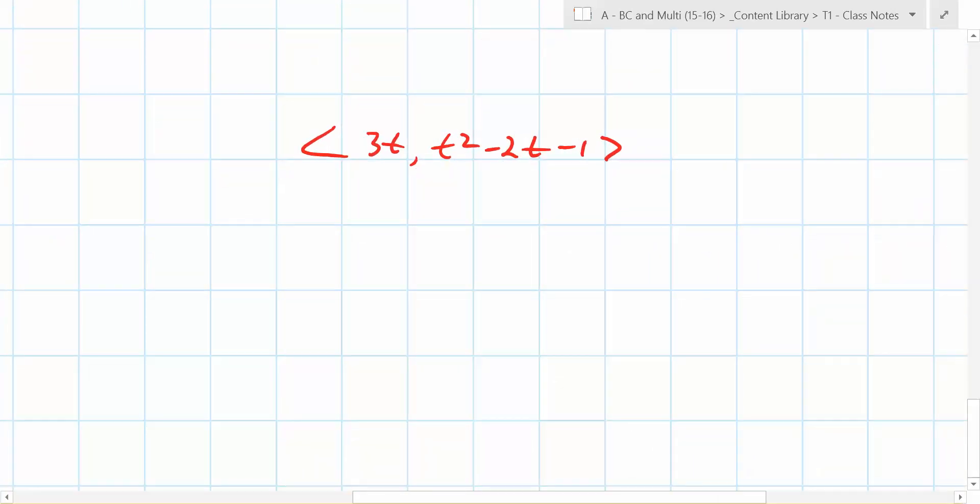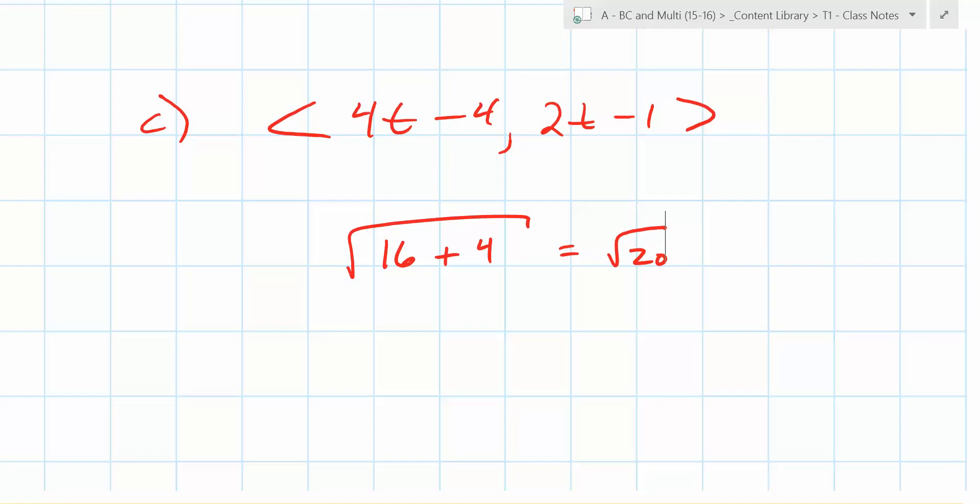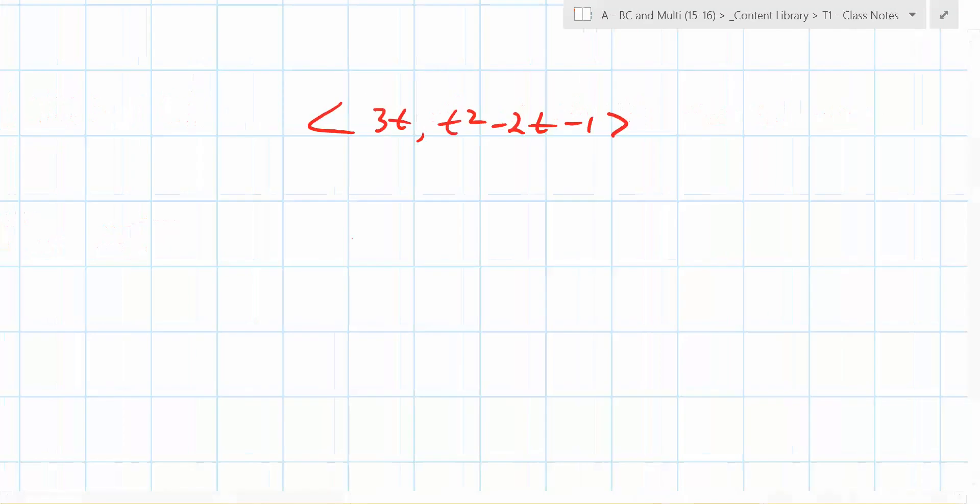I think it's 16 plus 4, right? So this one's, that's kind of cool. Square root of 20. Nice. And what's nice about that is, does it matter what time it is? What's the speed of this thing always going to be? Radical 20. Radical 20. That's kind of cool. Okay. What about this one?